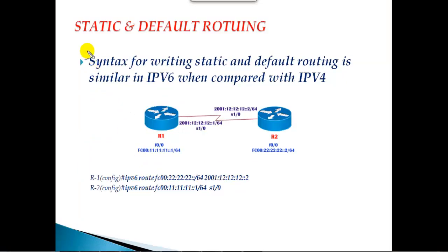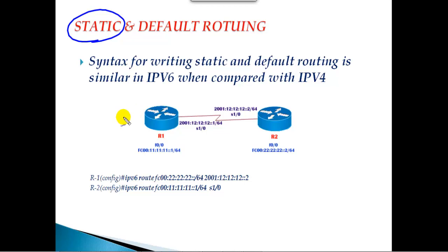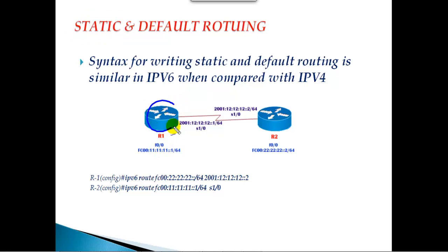The concept of static routing is exactly the same as in IPv4, so I'm not going to go into detail. I expect you to already know what static routing is, its features, and how to configure it. The syntax for writing a static route and default route is very similar in IPv6 compared to IPv4. For example, for Router 1 to write a route toward Router 2's LAN interface, the command would be as follows.